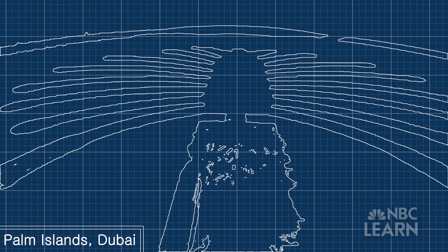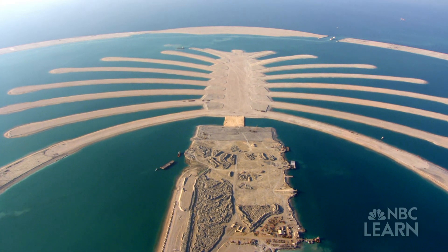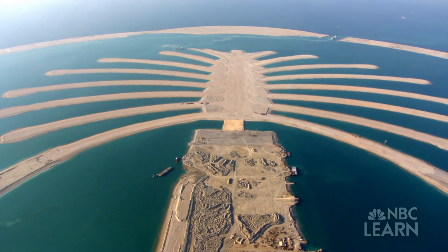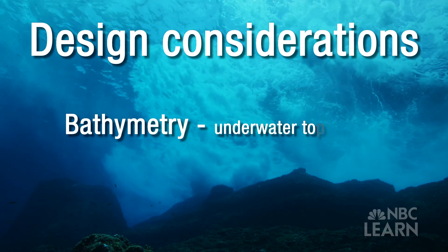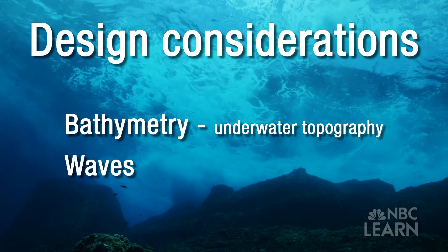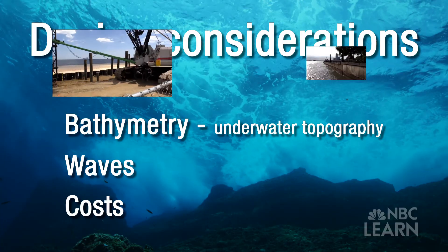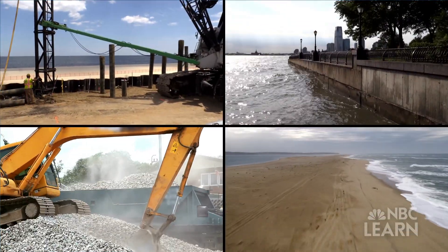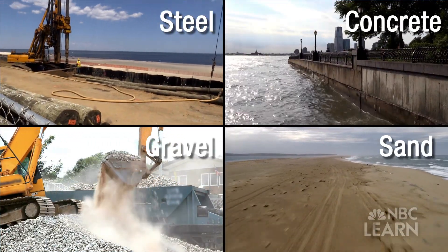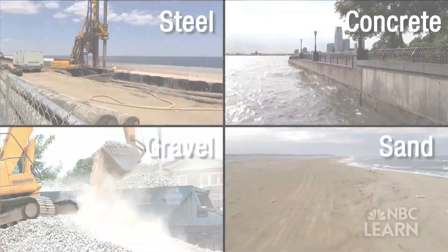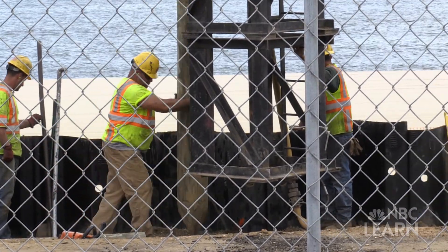When designing an island, there are several factors a coastal engineer must consider. You want to look at the bathymetry around the island and the waves that impact that place, and the costs associated with the island because of the material you have to use — steel versus concrete versus sand versus gravel. Based on that, you will design the protection for that island.